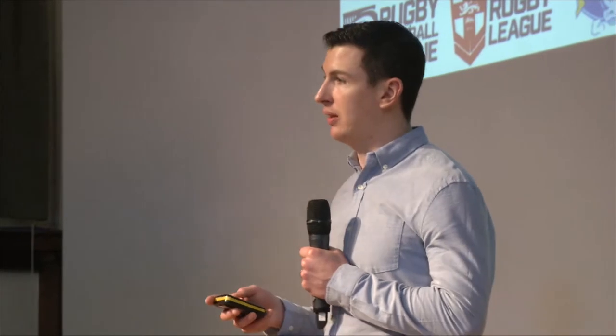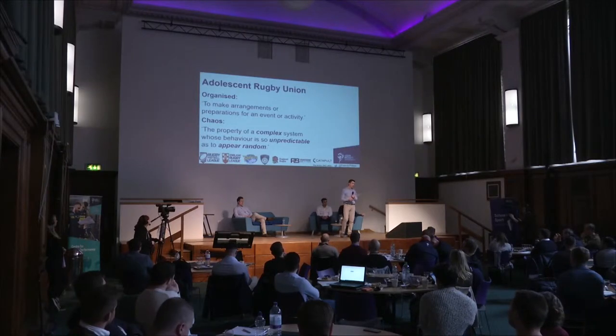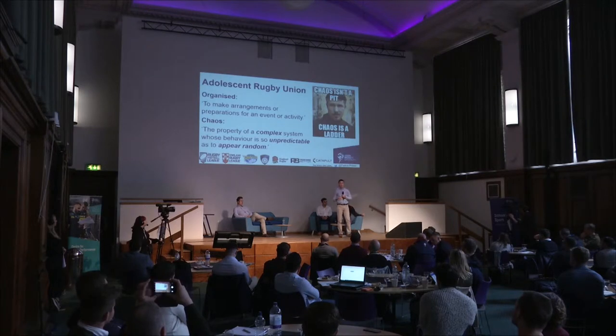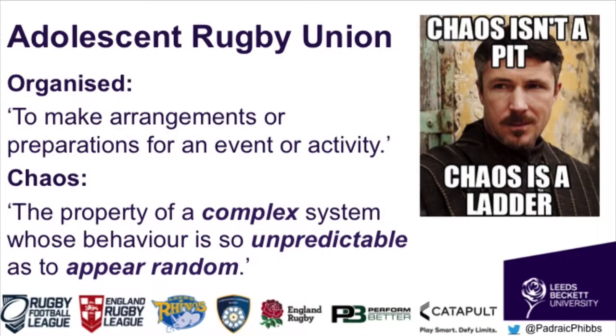We've come up with the term 'organised chaos' to sum up the randomness of what's going on. Organisation is making arrangements or preparations for an event — what they're doing is clearly organised because there are coaches there managing things on a week-to-week basis. The problem is the chaos: a complex system whose behaviour is so unpredictable it appears random. Some players will make it through, but there's probably a lot we can do as practitioners to make these pathways smoother and reduce this chaos.